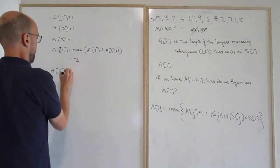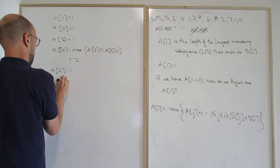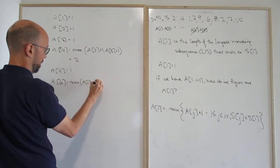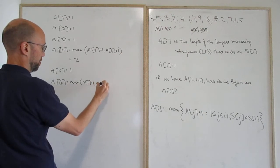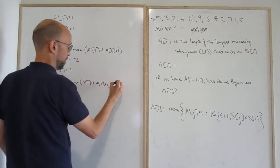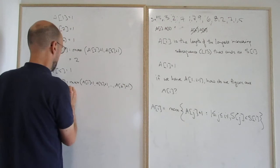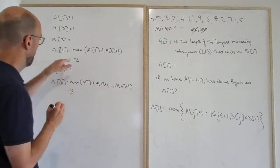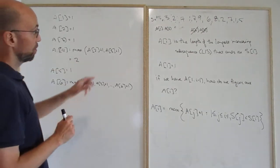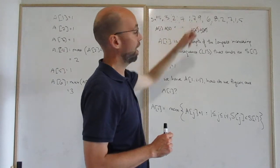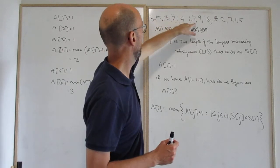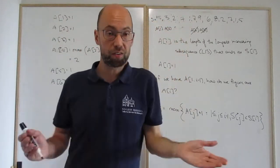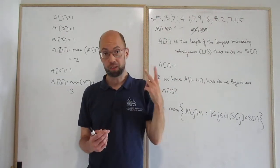a_5 equals 1. a_6 equals max(a_1 + 1, ... , a_6 + 1) — everything smaller than 7 contributes, so the max comes from a_4, giving a_4 + 1 = 3. The longest increasing subsequence ending with this seven has length 3; it could be 3,4,7 or 2,4,7. Note that 5,7 is increasing but only length 2, not the longest.